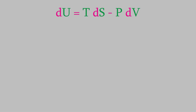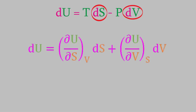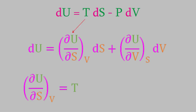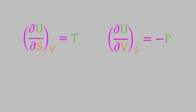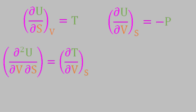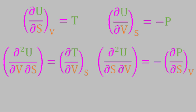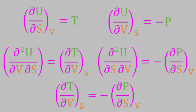Now let's move on to the equation for the change in energy. We'll take the total derivative of U, this time with respect to S and V. We can compare this equation to the one we already had for dU, which shows us that the first partial derivative is equal to T, and the second one is equal to negative P. Now we'll take the cross derivatives: differentiate the first expression with respect to V, and the second one with respect to S. We can set the two cross derivatives equal to each other because U is a continuous function. The equation we get is yet another Maxwell relation.